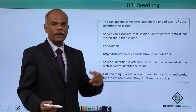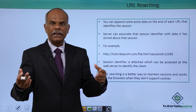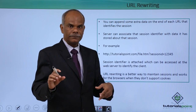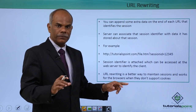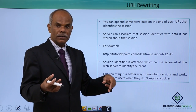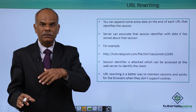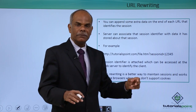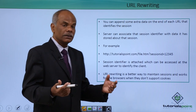The third mechanism is URL rewriting. You can append some extra data in addition to whatever data the client is sending, and that additional data will form the session ID. For example, if this is the URL submitted by the client — say file.htm — any key-value pairs are attached to the URL by a question mark. Additionally, session ID equals 12345 is appended to this. When this URL is visited, this part becomes the query string, from which the session ID can be separated and used for tracking purposes. This is a better way to maintain sessions even if browsers do not support cookies.